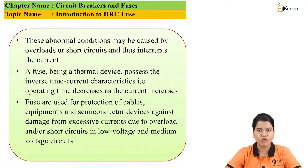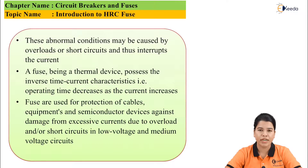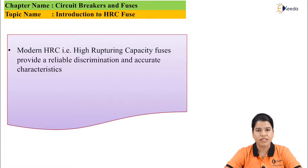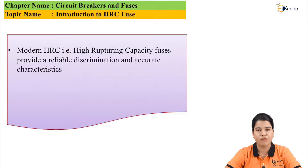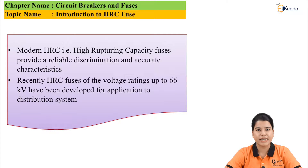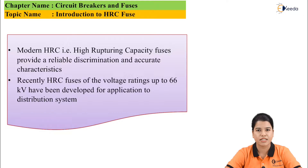The fuse is basically used for the protection of cables and various devices and equipment present in the power system from overload or short circuit conditions, but it is only operated for low voltage capacity. The modern HRC — that is, high rupturing capacity cartridge fuse — is used, which provides proper discrimination and isolation of the faulty system from the healthy system. Recently, HRC fuses have been designed for operating up to 66 kV.